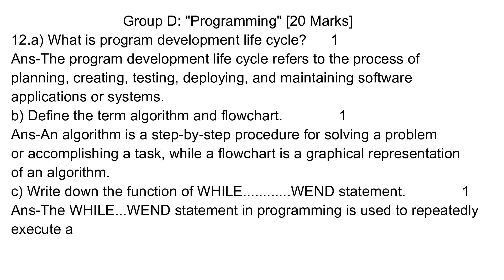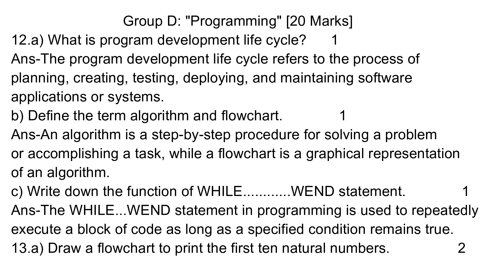Question 12. A. What is the program development life cycle? Answer: The program development life cycle refers to the process of planning, creating, testing, deploying, and maintaining software applications or systems. B. Define the terms algorithm and flowchart. Answer: An algorithm is a step-by-step procedure for solving a problem or accomplishing a task, while a flowchart is a graphical representation of an algorithm.